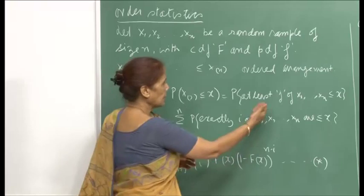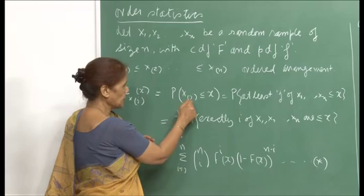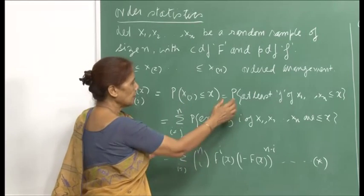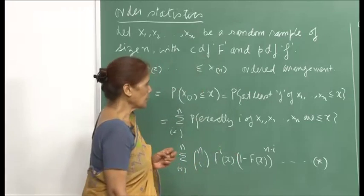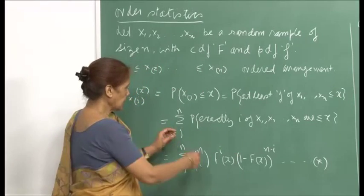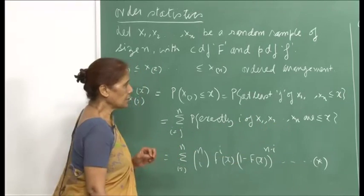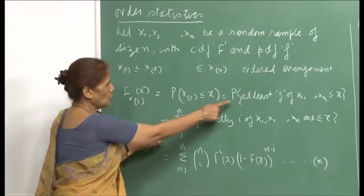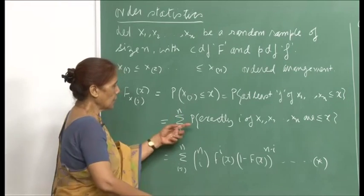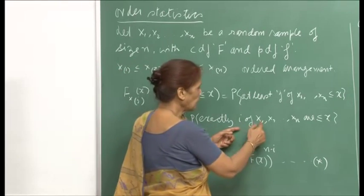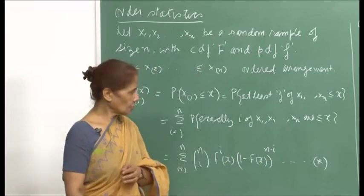If this is the j-th ordered statistic, that means X_1, X_2 up to X_j should all be less than or equal to x at least. So at least j of the X_1, X_2, ..., X_n should be less than or equal to x. More can be less than x, but at least j of them must satisfy this condition.